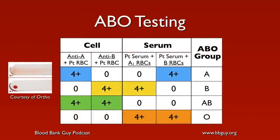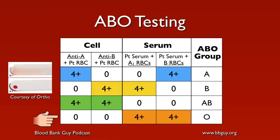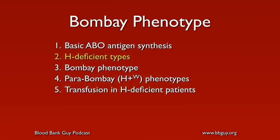For ABO testing, the cell grouping or forward typing tests patient red cells with reagent anti-A and anti-B. People who are blood group O have no activity with either reagent. The reverse grouping or back typing tests patient serum against laboratory A1 red cells and B red cells — group O patients should show reactivity with both.